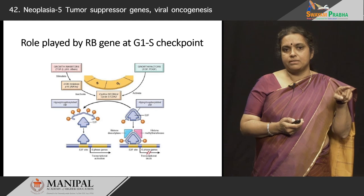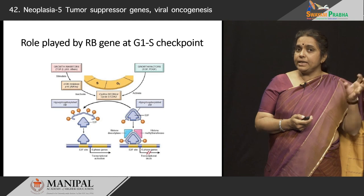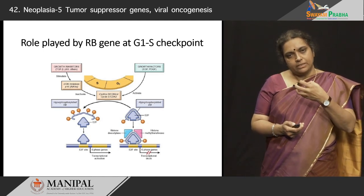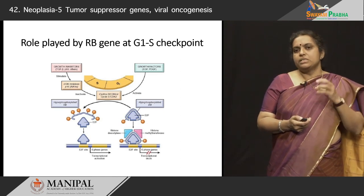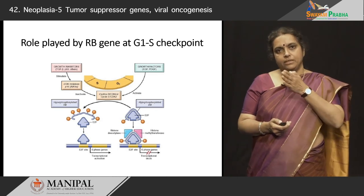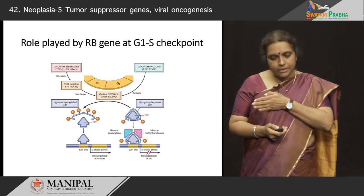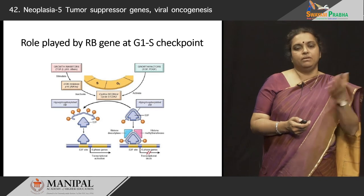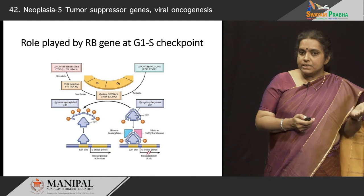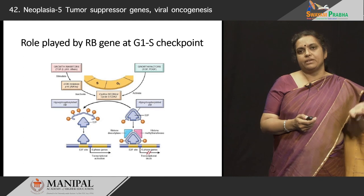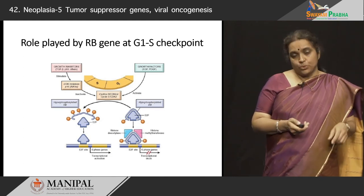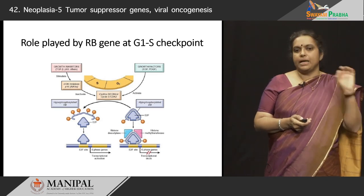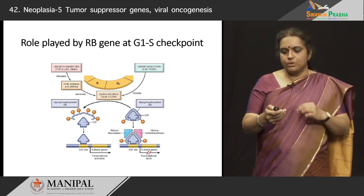There are various cyclins, cyclin-dependent kinases, and cyclin-dependent kinase inhibitors involved in this very complex process. Growth factors such as EGF and PDGF activate the cyclins and cause the active form of RB to become hyperphosphorylated, so that it releases E2F. Similarly, growth inhibitors such as TGF-beta, p53, and others stimulate CDK inhibitors which inactivate the cyclins and cause hypo-phosphorylation of RB, so that it sequesters E2F. What you must remember is that the RB protein plays a very important role at the G1/S checkpoint. The hypo-phosphorylated form is the active form that sequesters E2F, keeping it unavailable for cell proliferation.